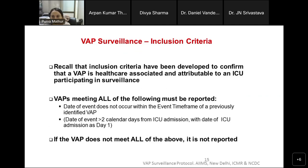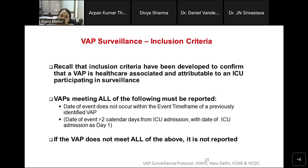The inclusion criteria confirm that a VAP is healthcare-associated and attributable to the ICU. VAP will occur in the ICU because ventilated patients are there. You must report all cases where the date of event does not occur within an ongoing event, and the date of event must be more than 2 calendar days from ICU admission. A case report form is completed for all VAPs that meet the inclusion criteria — as for BSIs and UTI, everything that fits your definition must be reported on a monthly basis.